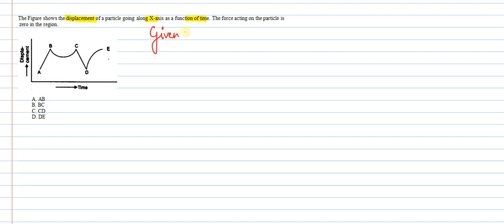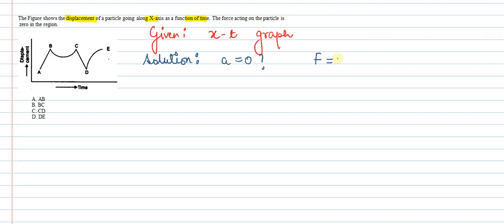This is an x-t graph. To find in which of these regions the force will be zero, we just need to find where acceleration is zero. By the equation F = ma, we can say that force is also zero wherever acceleration is zero.